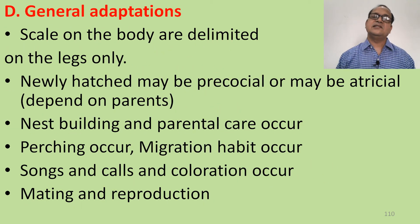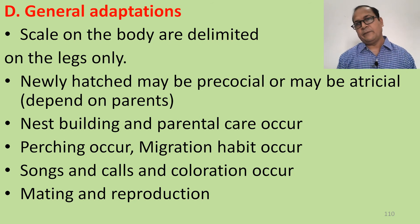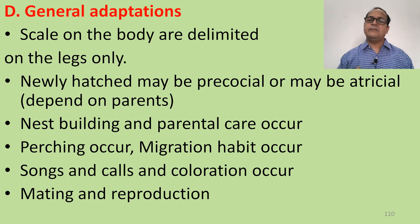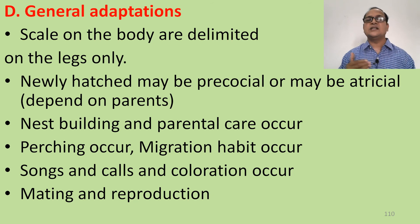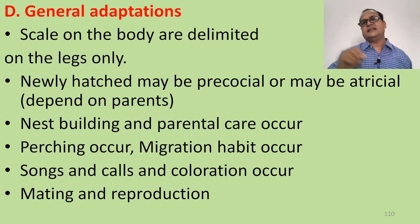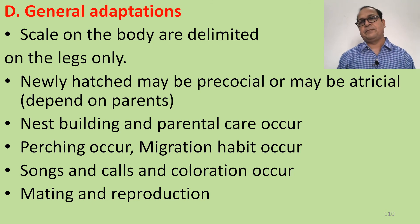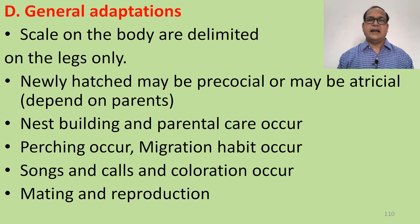General adaptations: scales are limited to the legs only; the rest of the body is covered with feathers. Newly hatched chicks may be precocial (independent of parents) or altricial (dependent on parents). Nest building and parental care occur. Migration habits are present — birds migrate from one place to another in search of food or for breeding. Songs and calls are produced due to the presence of the syrinx, which is a characteristic feature of birds. Sexual reproduction occurs, and sexual dimorphism is present — males and females are morphologically different, with males generally being more colorful and performing courtship behavior. This is all about flight adaptations. Thank you very much.